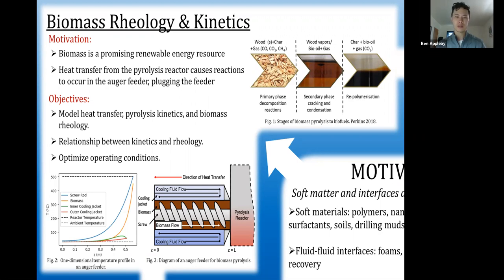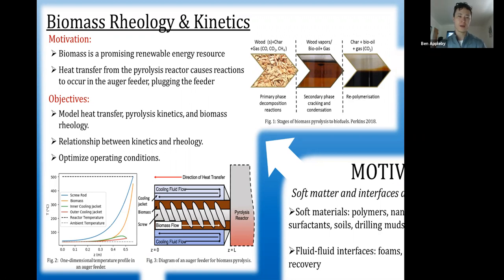Little is really known about the relationship between pyrolysis kinetics and biomass rheology. The goal of this project is to model heat transfer, pyrolysis reaction kinetics, and biomass rheology within the auger feeder system using Python. Figure two shows a one-dimensional temperature profile within the auger feeder. The end of the auger is heated by the reactor and heat travels down the steel auger from Z equals L to Z equals zero via conduction. The biomass is heated through contact with the auger via conduction and convection. The intercooling loop flows counter-current in the annulus around the biomass pulling heat from the biomass. Heat transfer in the cooling jacket proceeds via conduction and convection.